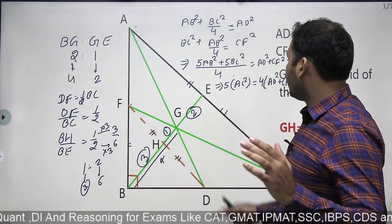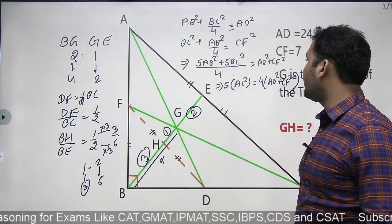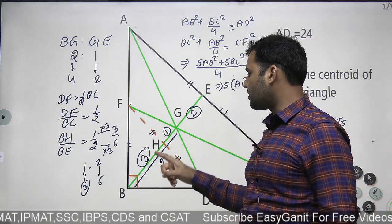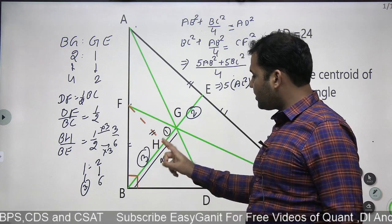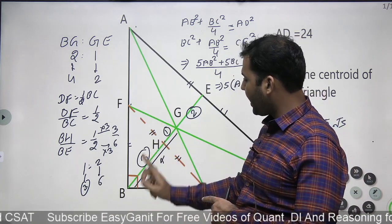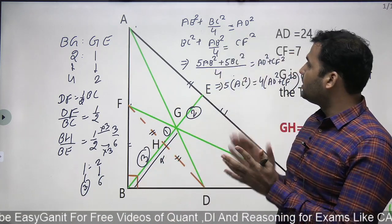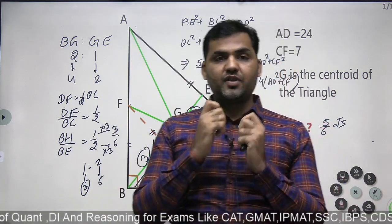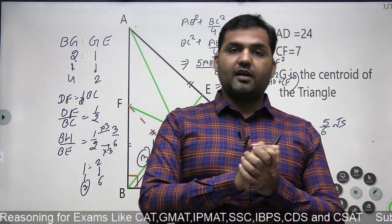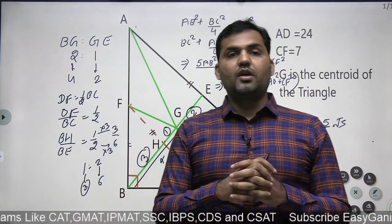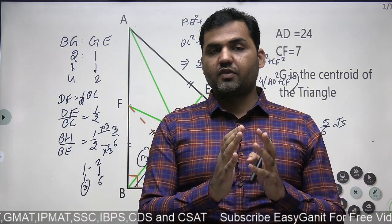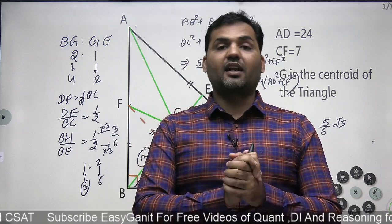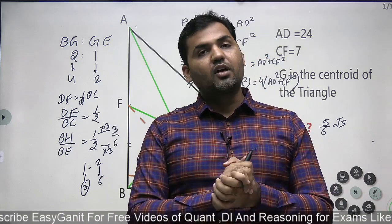Two theorems have been covered in this fifth video of 50 golden rules of geometry: 4 times (AD² + CF²) = 5 times the square of the hypotenuse, and BH:HG:GE = 3:1:2, where G is the centroid and H is the intersection of line DF with median BE. Episode links of all previous four episodes are in the description. Subscribe to the Telegram group for doubt-clearing and mentorship for MBA entrance exam or government job exam preparation. Subscribe to the channel. Thank you, see you in the next part.